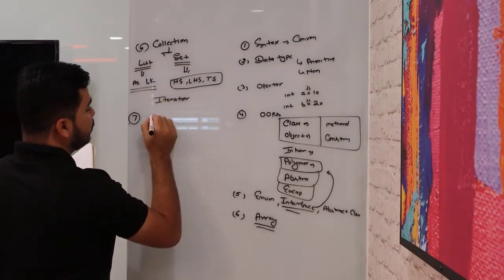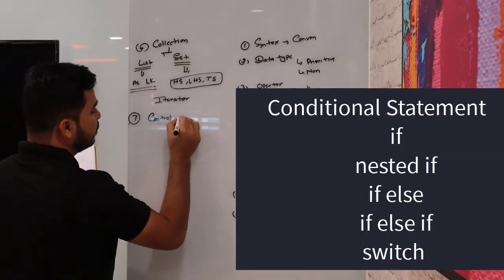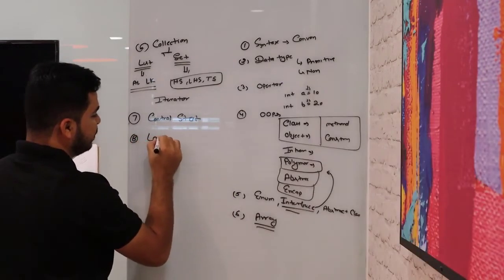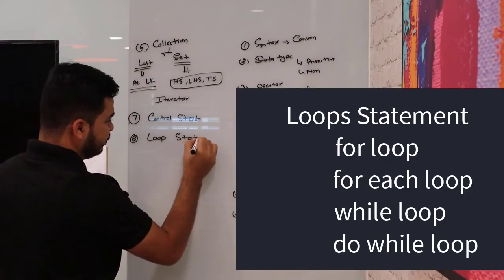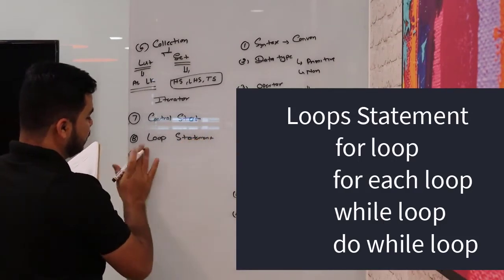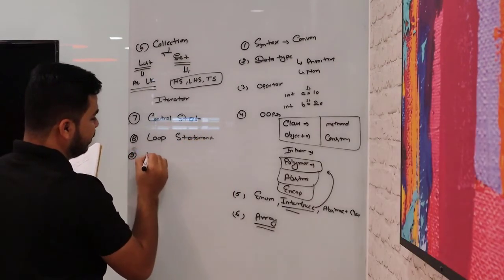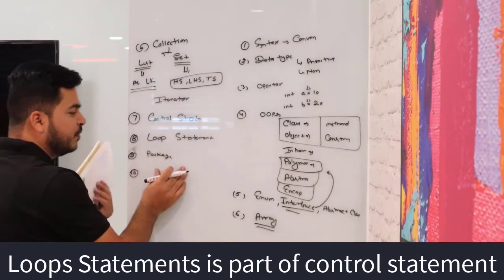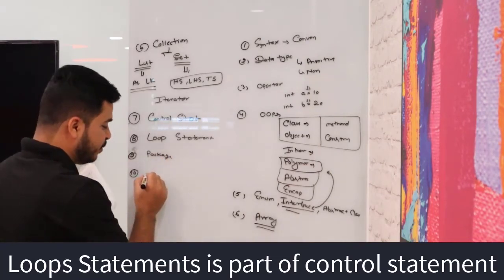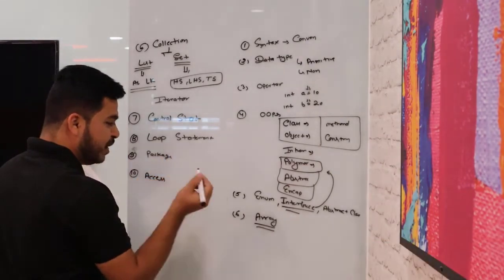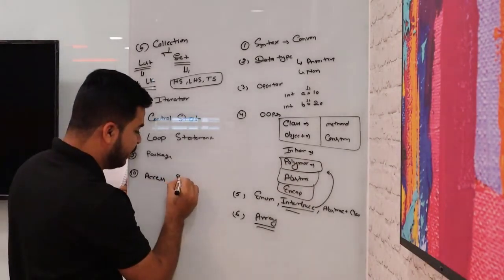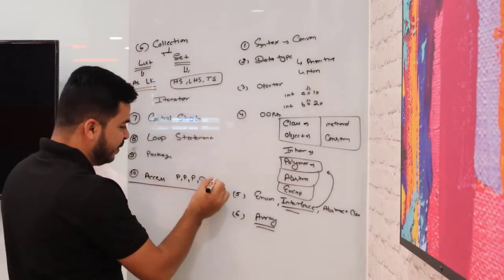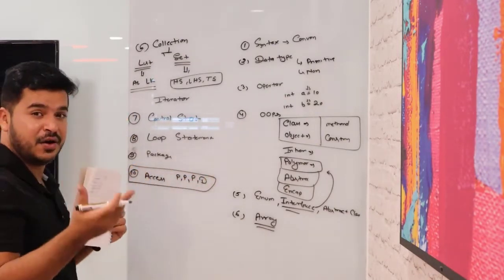You can also cover control statements and the different kinds of loop statements we have. Then you can cover packages — what a package is, how to create packages and sub-packages. Once you start working with packages, you can also study access modifiers: public, private, protected, and default. Study the different kinds of access modifiers and how to use them.